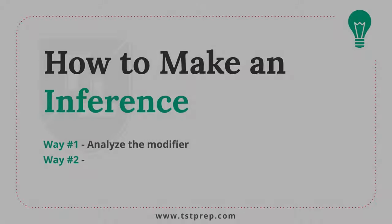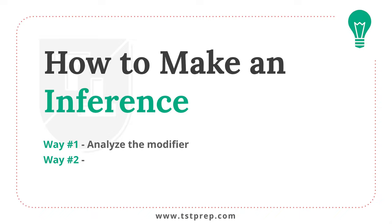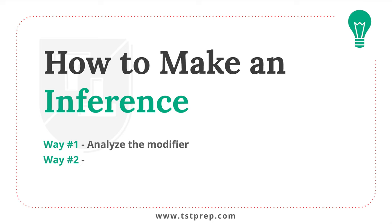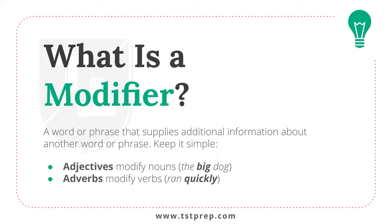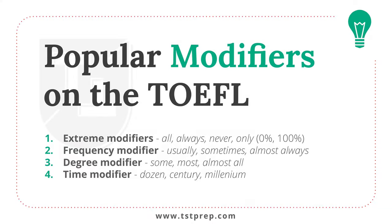Focus on inference and author's purpose questions when making inferences. The first way you can make an inference is to analyze the modifier. A modifier is an adjective or adverb — a word or phrase that supplies additional information about another word or phrase. For example, 'a big dog' — 'big' is an adjective modifying the noun 'dog.' 'Ran quickly' — 'quickly' is modifying the verb 'run.' Modifiers come up again and again on the TOEFL, and paying attention to them is really helpful — missing them is an easy way to get a wrong answer.